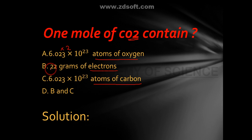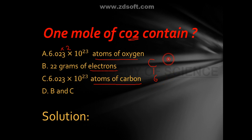Now checking option B: 22 grams of electrons. As we know, carbon's atomic number is six, so it has six electrons. Oxygen has atomic number eight, so it has eight electrons. For CO₂: six plus eight plus eight equals twenty-two electrons total.